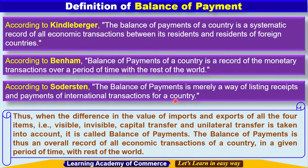From these definitions, what we can learn is that when the difference in the value of imports and exports of all four items — that is visible, invisible, capital transfers and unilateral transfers — is taken into account, it is called balance of payments. As in the previous slide we studied four components of balance of payment: visible items, invisible items, capital transfers and unilateral transfers.